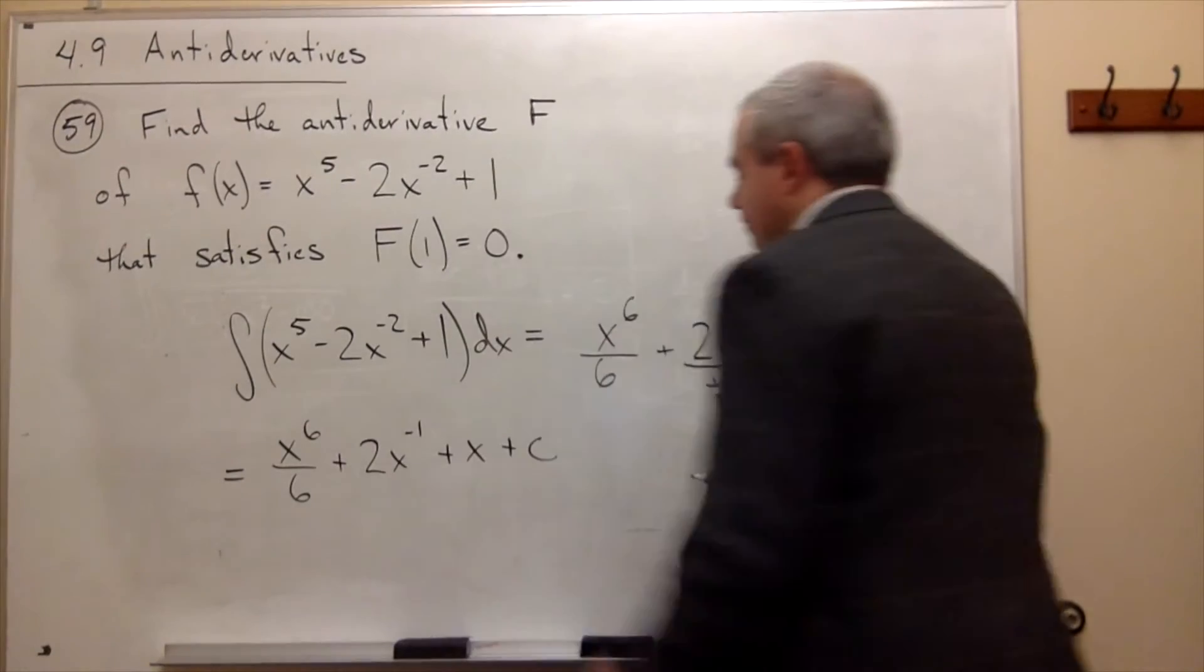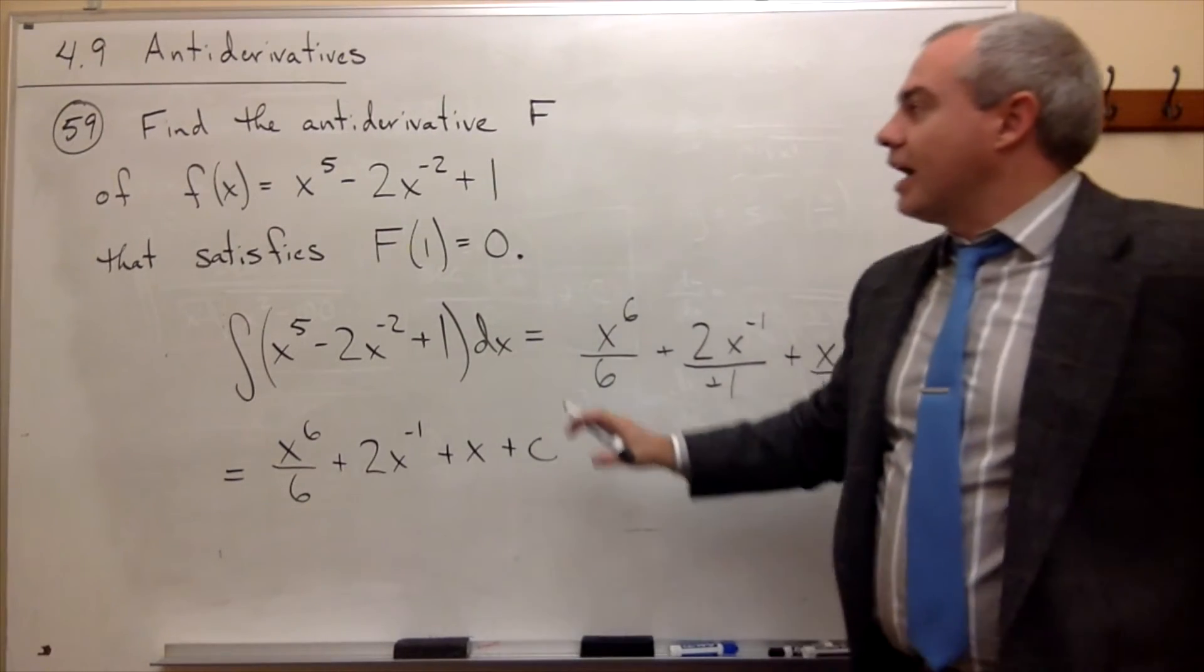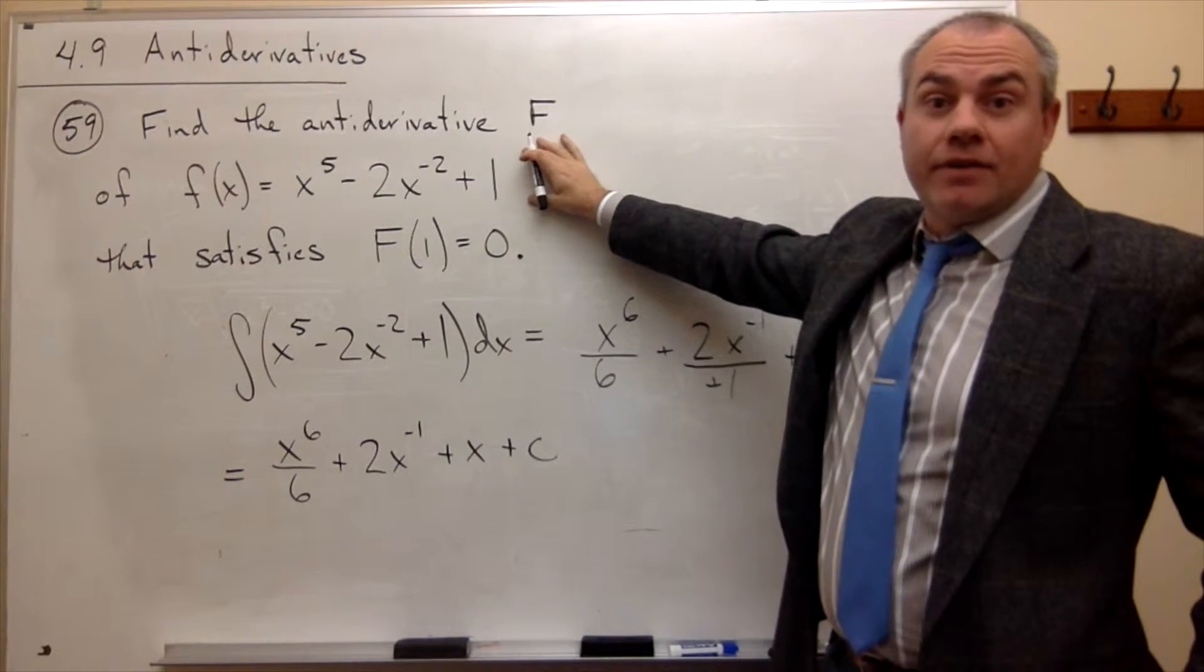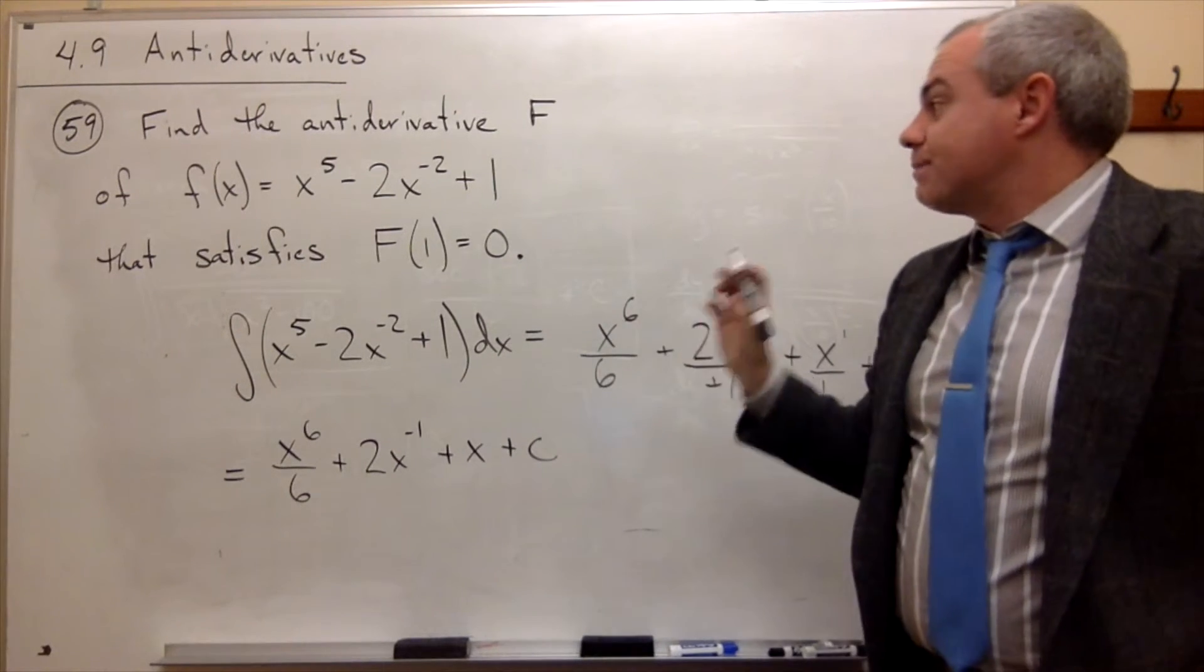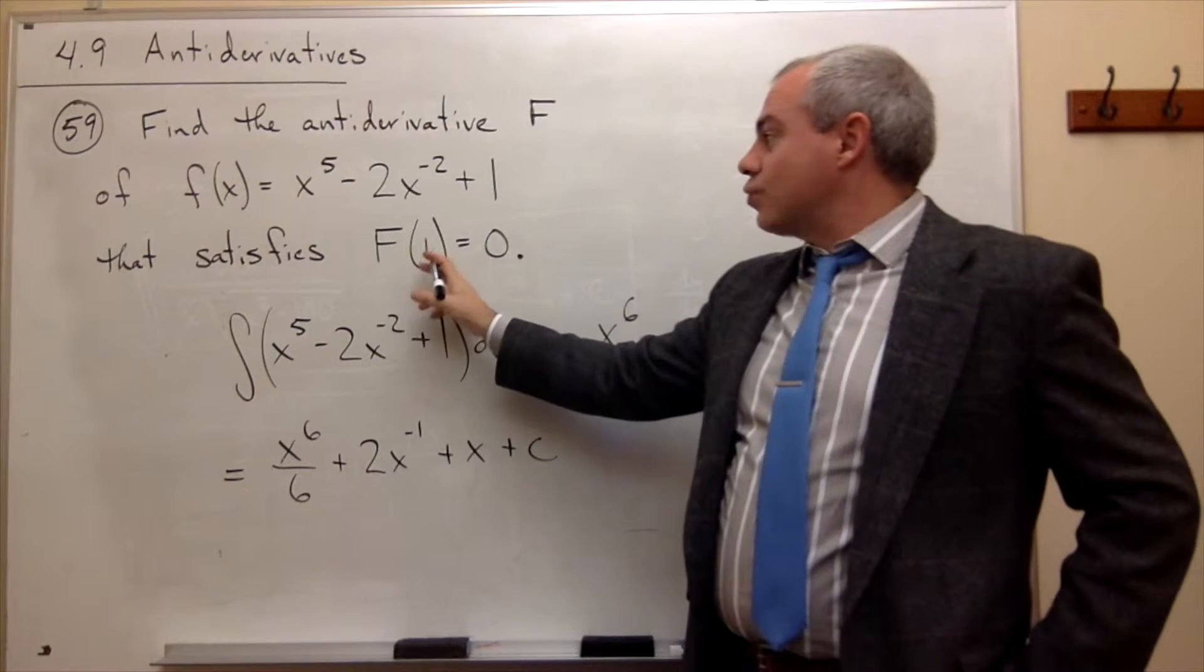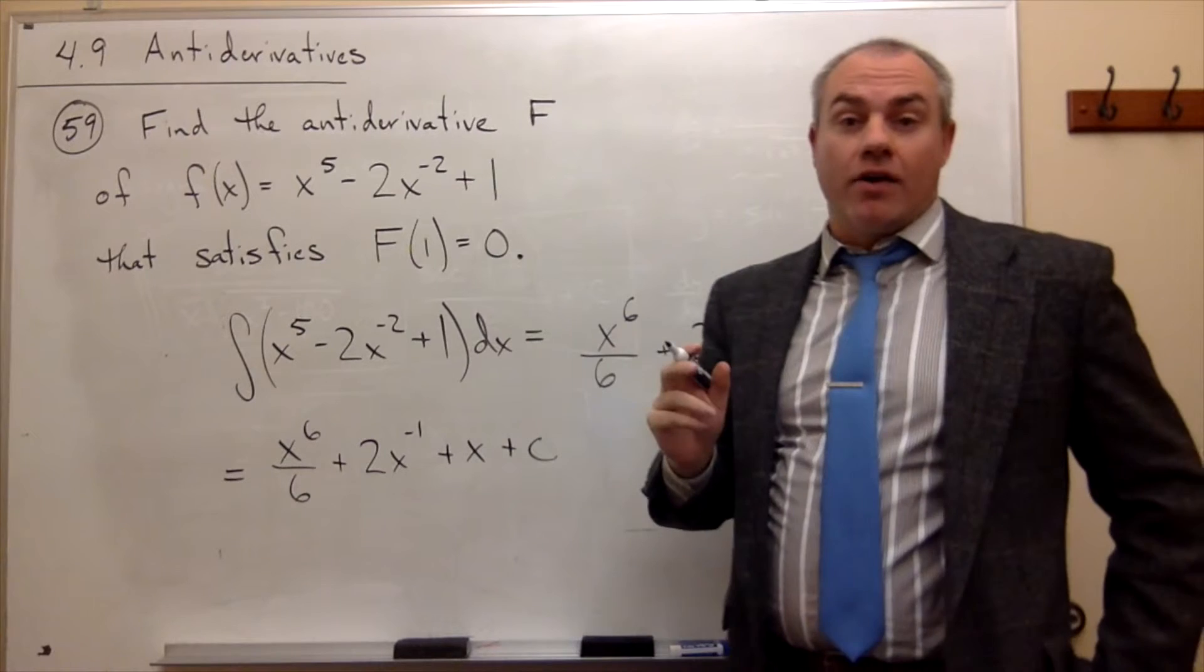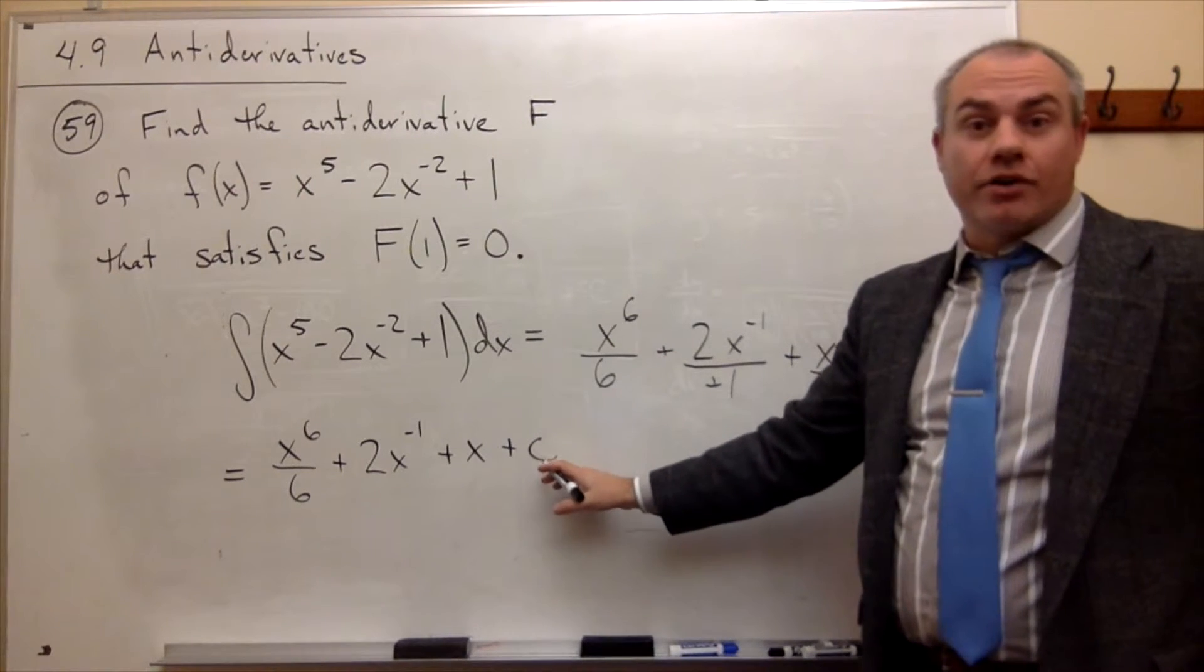So this is my antiderivative. In other words, it's all of the antiderivatives of this function little f. Now I need to say, specifically, if x is 1, I want to get 0. In other words, what is this constant of integration?